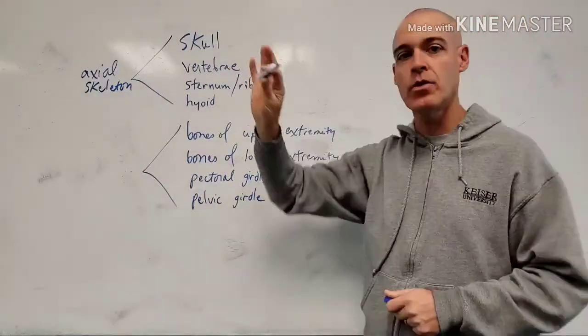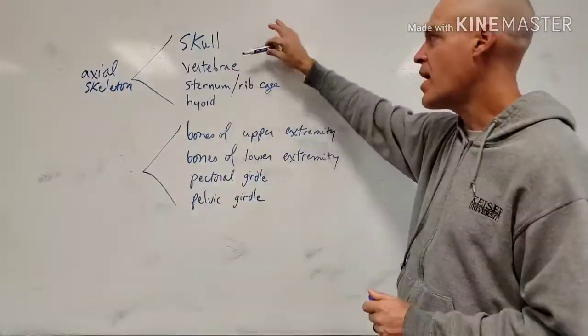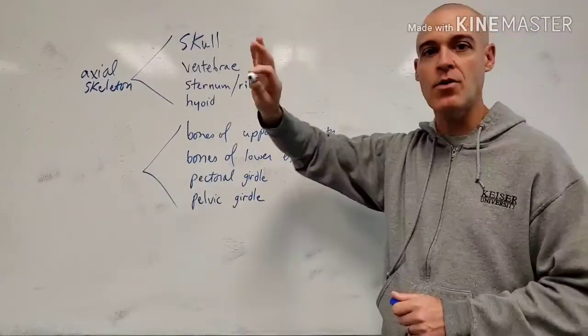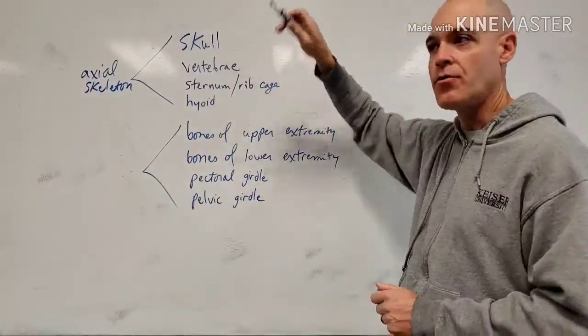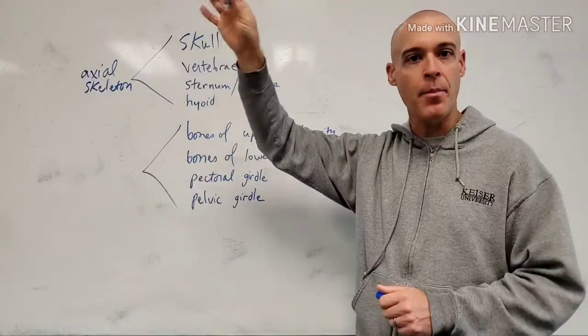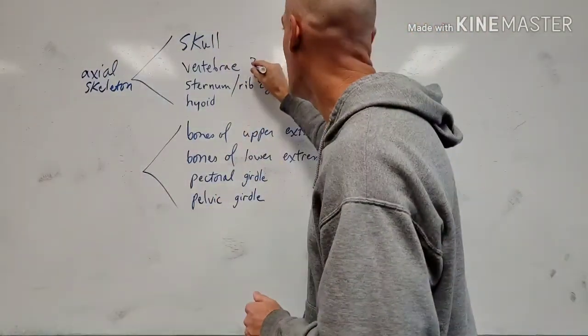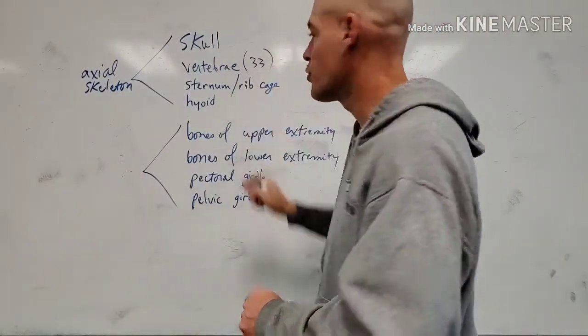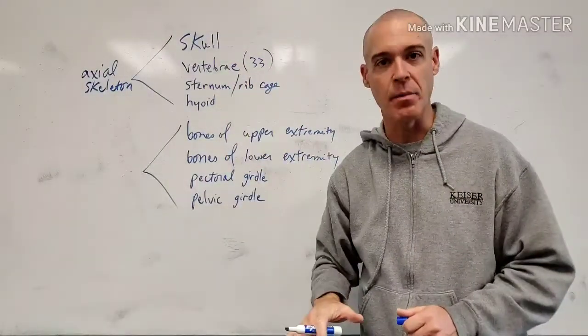This includes not just cervical, thoracic, and lumbar, but also sacrum and coccyx. So it's the entire vertebral column from the top all the way down. That's a total of 33 vertebrae if you count every single segment.